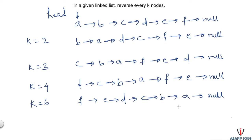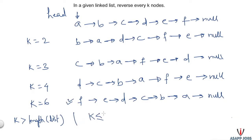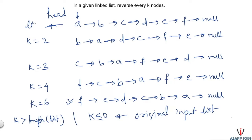Now we need to think about boundary cases: what if k is negative or zero, or k is greater than the length of the list? It's always good to ask the interviewer about their expectations. Normally, if k is greater than the length of the list, they want you to reverse the entire linked list. If k is less than or equal to zero, that's the base case - return the input unchanged, same as the original input list.